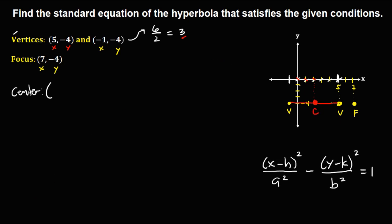The coordinates of the center are positive 2 and negative 4. So the center is (2, −4), meaning h is positive 2 and k is negative 4.